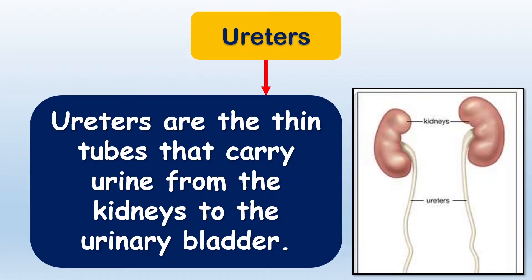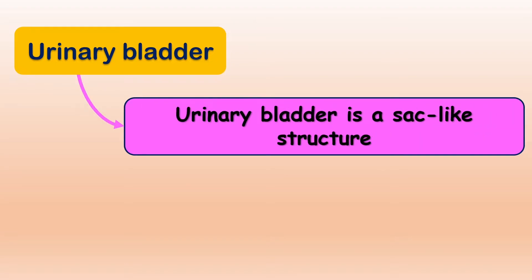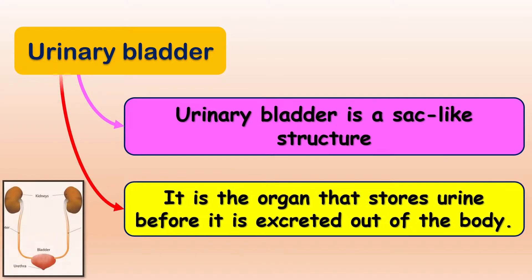The waste removed from the body forms urine. Ureters are the thin tubes that carry urine from the kidneys to the urinary bladder. The urinary bladder is a sac-like structure — 'sac' meaning a bag — it is the organ that stores urine before it is excreted out of the body.